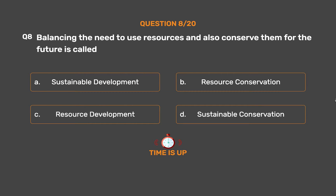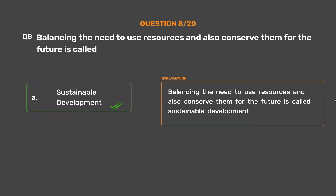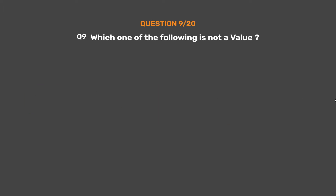The correct answer is Option A: Sustainable development. Balancing the need to use resources and also conserve them for the future is called sustainable development.